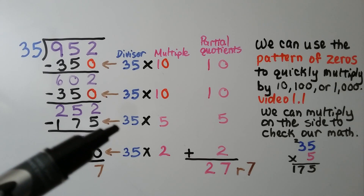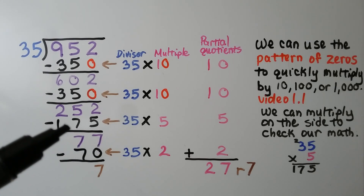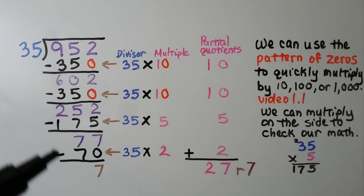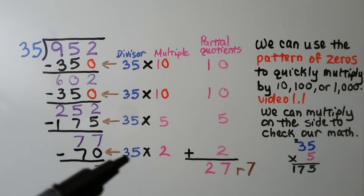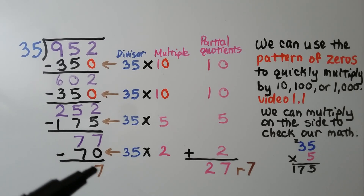We try 35 times 5, which is 175. We subtract it and get 77. Then we subtract another 35 times 2, and we get 7 for our remainder.